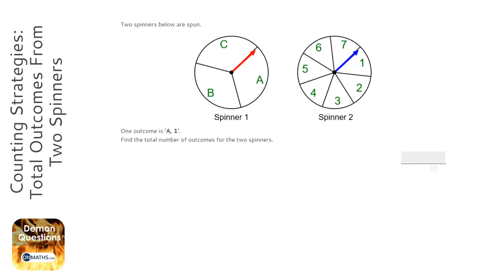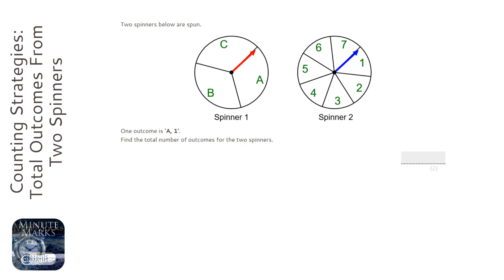So we have two spinners. Spinner 1 has three outcomes and Spinner 2 has seven. So we're looking for the total amount of outcomes. If we start writing down the outcomes, it might become obvious how many there will be.